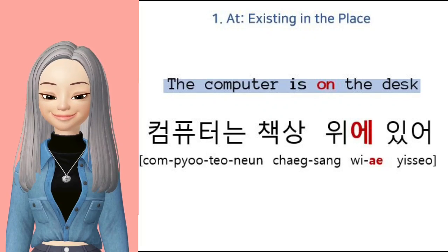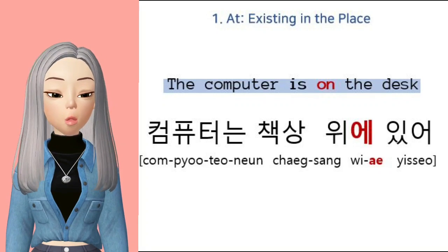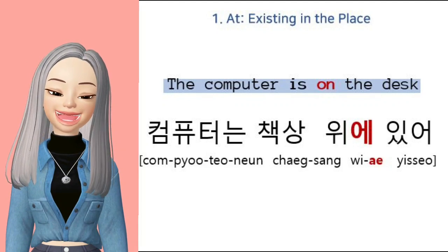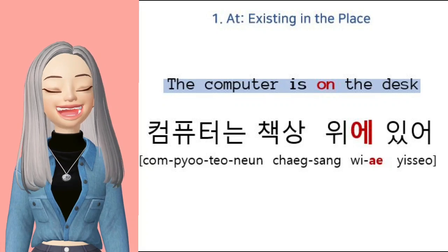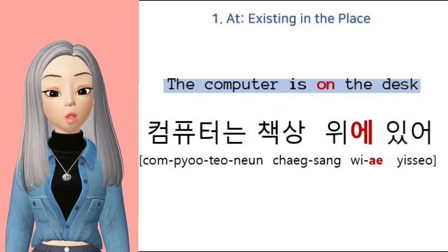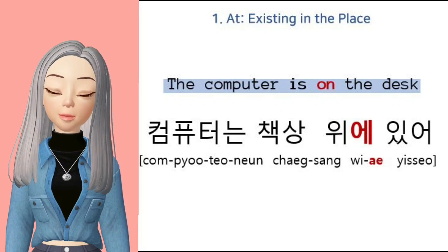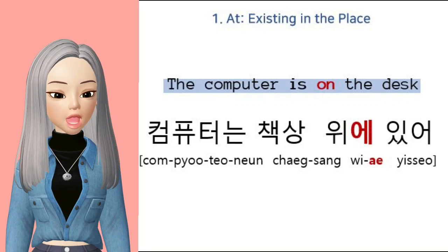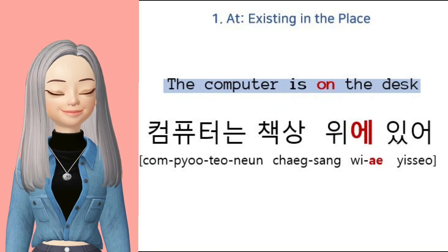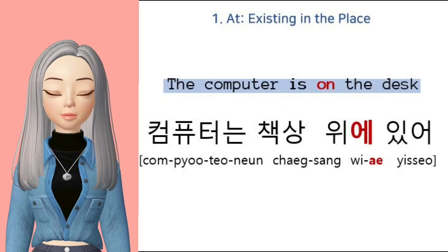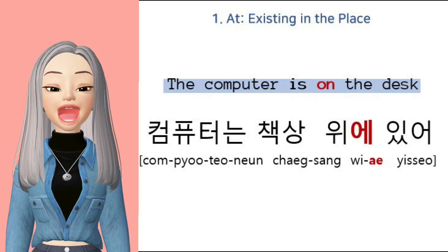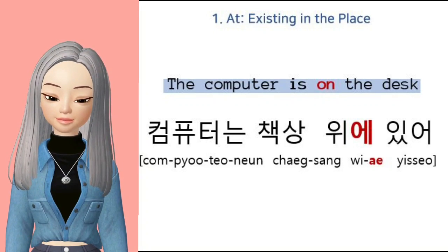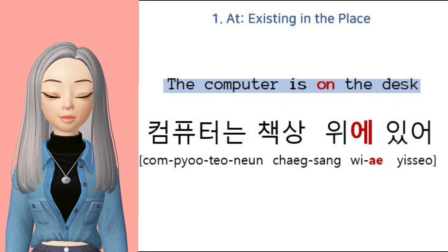Let's try one more example. This time, instead of 'in' or 'at', we're going to say 'on'. The sentence is 'The computer is on the desk.' As this is also talking about place, we still use 에. Remember in our Korean vocabulary playlist, we learned about directions and prepositions. For 'on', we say 위. So we say 컴퓨터는 책상 위에 있어 — 위에 becomes 'up on the desk.'